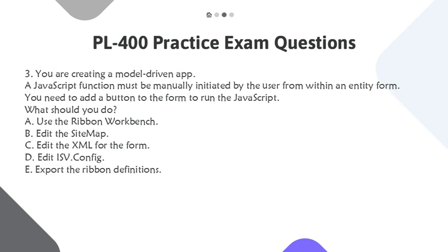Question 3. You are creating a model-driven app. A JavaScript function must be manually initiated by the user from within an Entity form. You need to add a button to the form to run the JavaScript. What should you do?